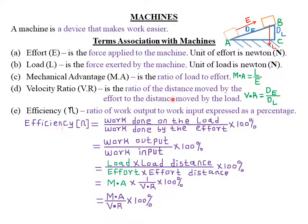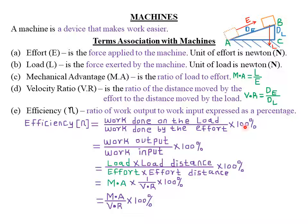Mathematically, efficiency η equals the work done on the load — the work output — divided by the work done by the effort — the work input — multiplied by 100%. The work done on the load equals load L times load distance DL. The work done by the effort — the work input — equals effort E times effort distance DE. So efficiency can be written as L × DL divided by E × DE, multiplied by 100%.